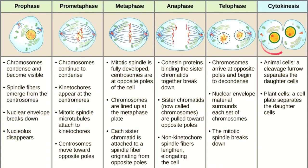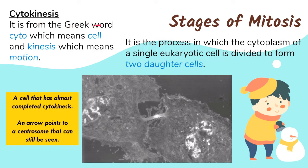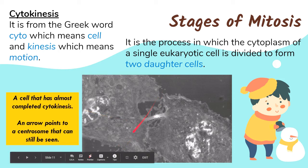There is a difference in cytokinesis between animal and plant cells. In animal cells, a cleavage furrow forms — the cell membrane deepens inward until the two sides meet and the cell membrane divides. Cytokinesis comes from the Greek 'cyto' meaning cell and 'kinesis' meaning to move. It is the process by which the cytoplasm of a eukaryotic cell is divided into two daughter cells, with a pinching of the cell membrane and cytoplasm until the two cells separate.